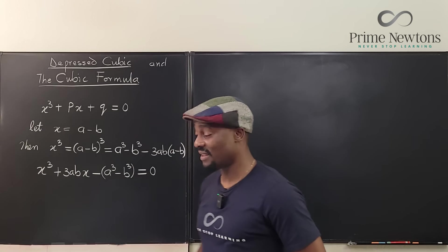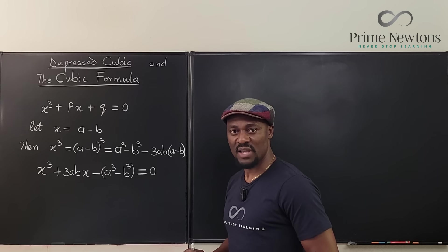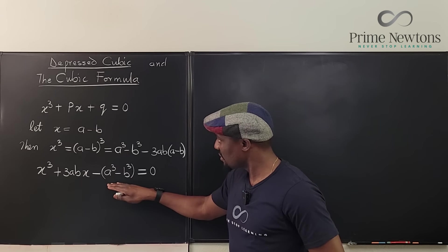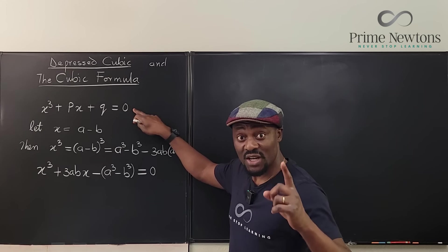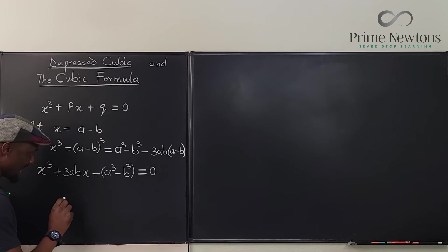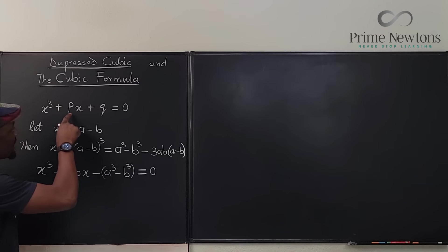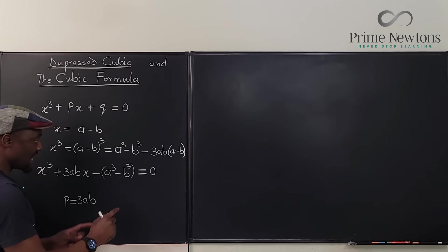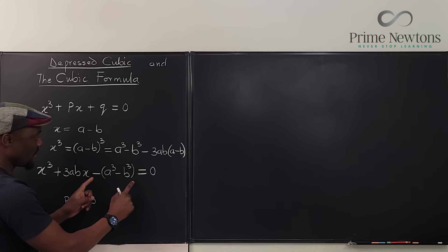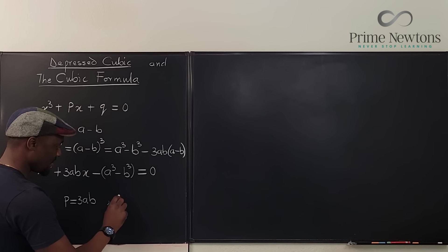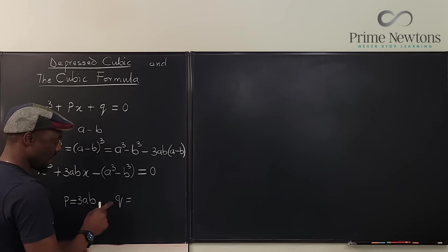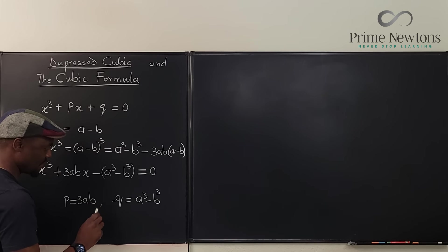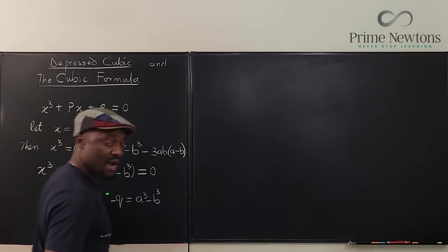Now I'm going to name everything that I have. I can switch this to be b cubed minus a cubed, but it doesn't matter. What I have here looks like the standard depressed cubic form — p is whatever is multiplying x, which in this case is 3ab. And the constant term q is such that minus q equals a cubed minus b cubed.